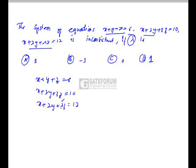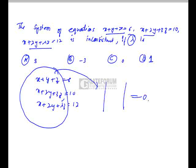Now, in order to find the value of lambda, what we do is we will make the determinant of the coefficient matrix equal to 0. If the determinant of the coefficient matrix is 0, then the equations will be consistent.